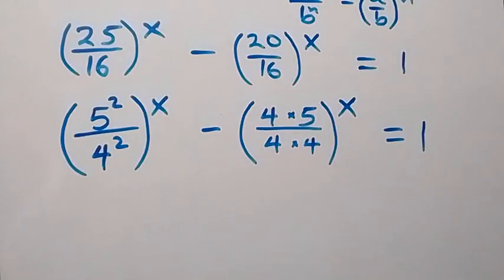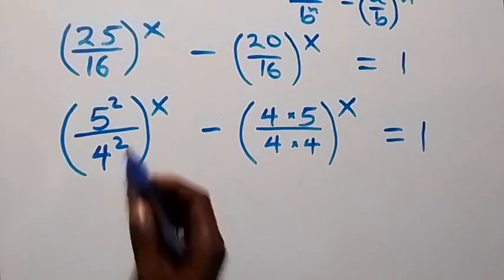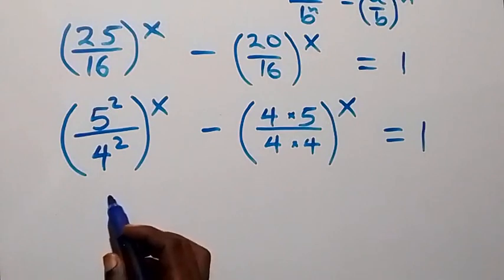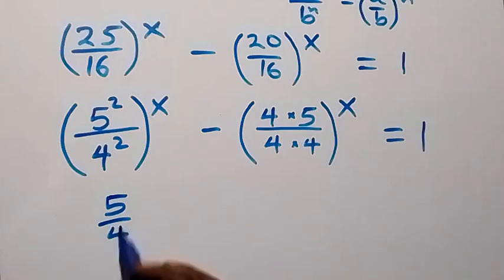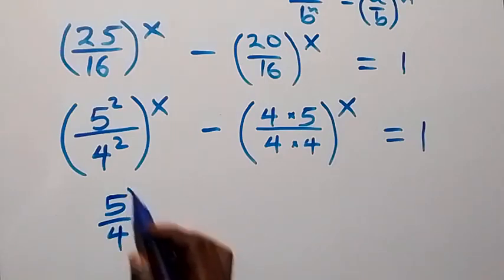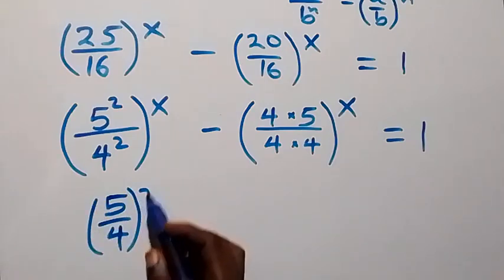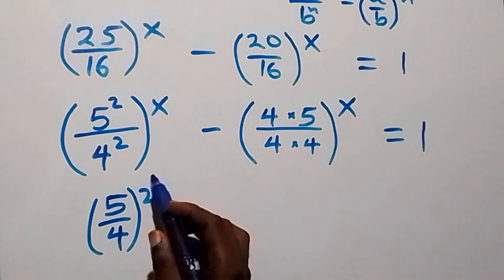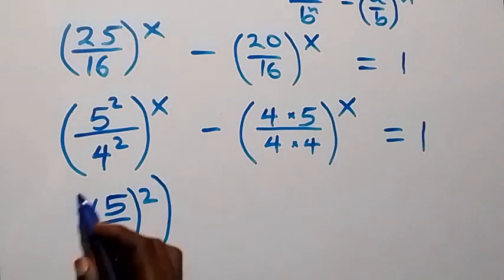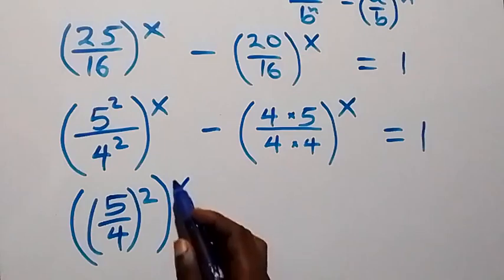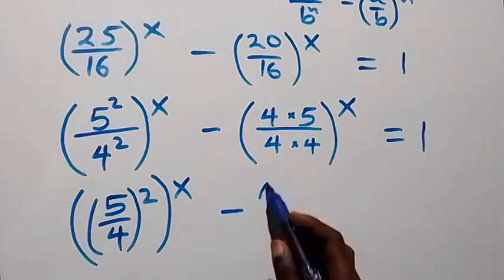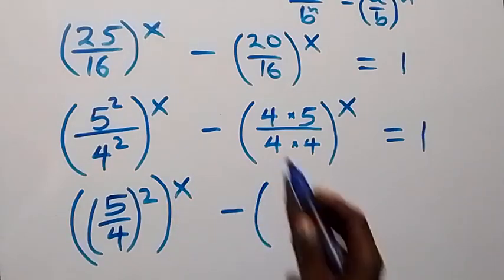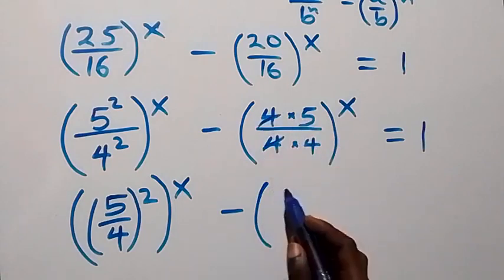We can write (5/4) all squared, raised to power x. Then the 4s in the second term cancel each other, so we have (5/4) squared raised to power x minus (5/4) raised to power x equals 1.